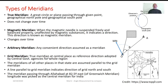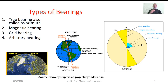Most of the times, the true meridian at a central place is given as reference direction for a particular region. Hence, the meridian for all other places in that region will be parallel to that chosen meridian. Such a selected true meridian is called as grid meridian. For example, the meridian passing through Allahabad at 82.5 degrees east of Greenwich meridian is chosen as grid meridian for India. Depending on the kind of meridian we refer to, bearings can be expressed as true bearing, magnetic bearing, grid bearing, or arbitrary bearing.